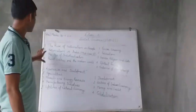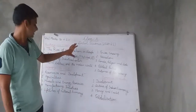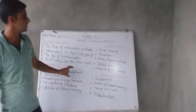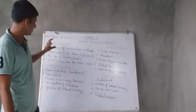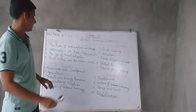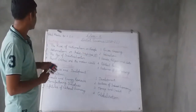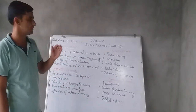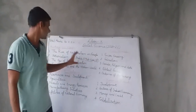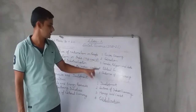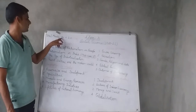So this is the complete syllabus for social science: four chapters in history, five chapters in geography, five chapters in civics, and four chapters in economics. You can mark these chapters in your books when you watch this video, so that you know which chapters to study and which to skip. The final examination will be of 80 marks total — 20 marks each for history, geography, civics, and economics.